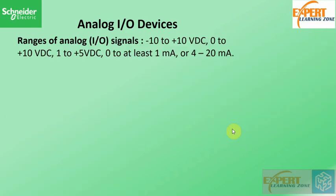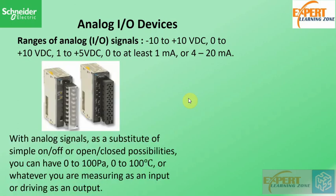There are a variety of ranges of analog input output signals for an analog input output device, and they usually include: minus 10 to plus 10 volt DC, 0 to plus 10 volt DC, 1 to plus 5 volt DC, 0 to at least 1 milliamp, or 4 to 20 milliamps.